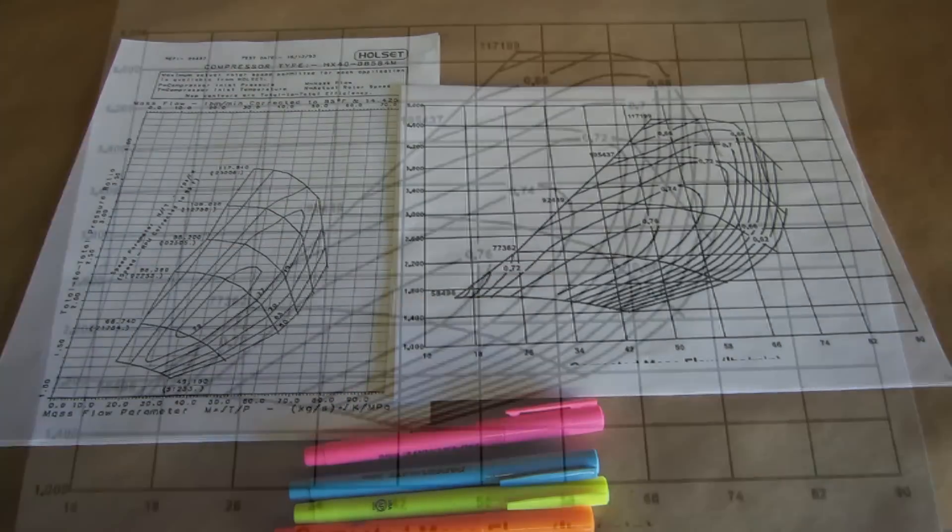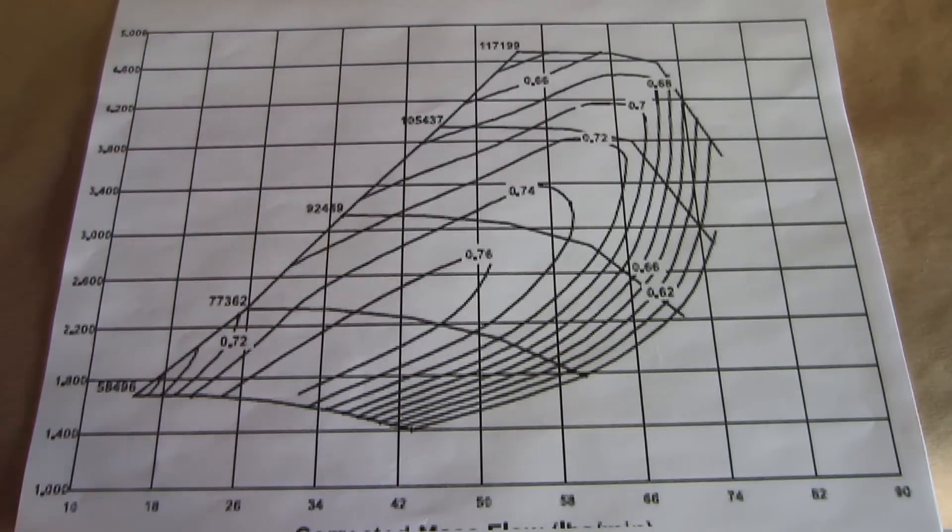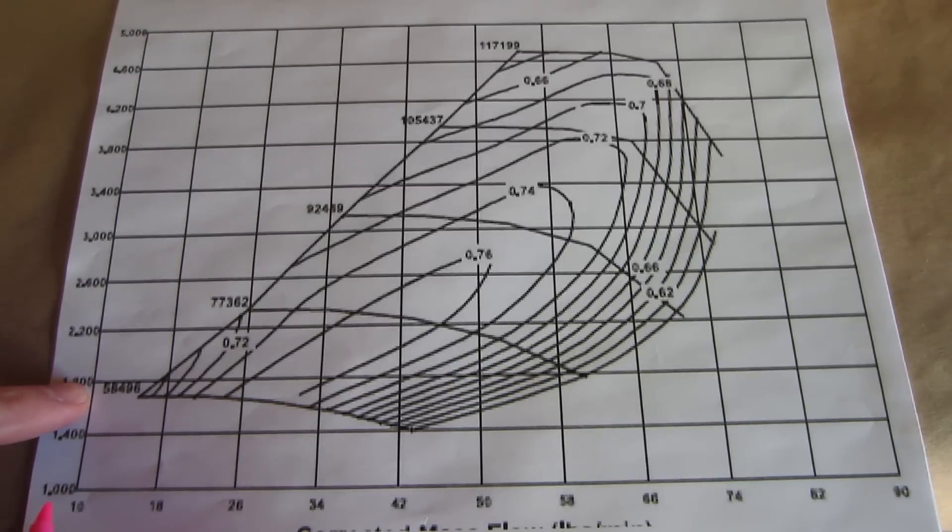We will start with the BorgWarner map. This can be a very daunting task by just looking at this map, but it is really quite simple. We will start by labeling the key parts of the compressor map.